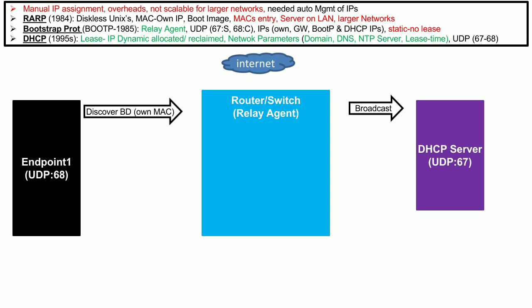The router then forwards this broadcast to all available DHCP servers or a specific one. Any available DHCP server can then offer an IP address to the endpoint along with other networking parameters including the gateway, subnet mask, BOOTP IP, DHCP IP, and lease time. This information is offered to the client using destination port 68. The client communicates with the server using destination port 67, with its source port being 68.